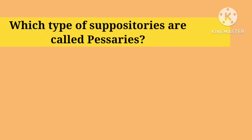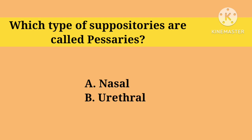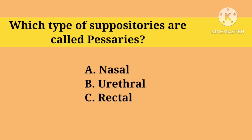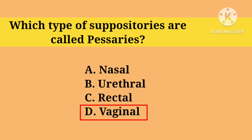Which type of suppositories are called pessaries? Option A. Nasal, B. Urethral, C. Rectal, D. Vaginal. Right answer is D. Vaginal.